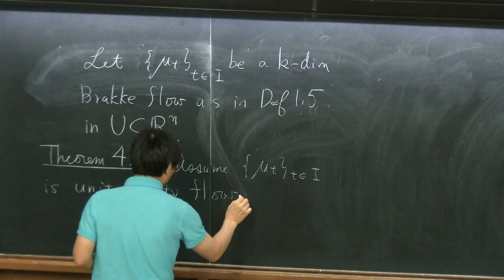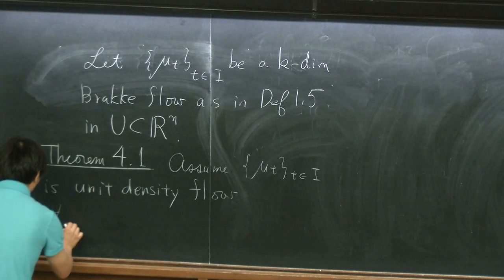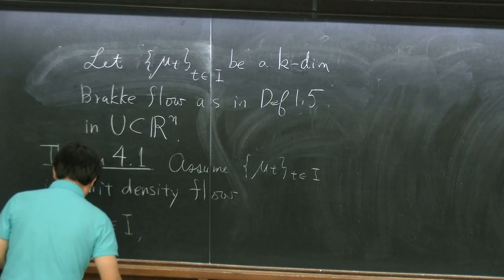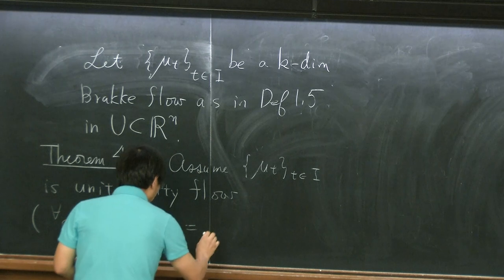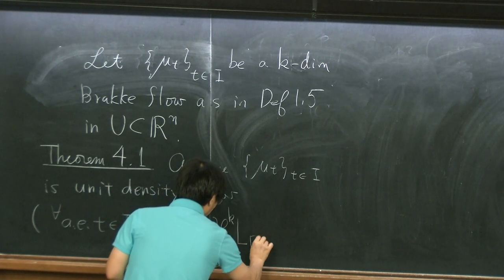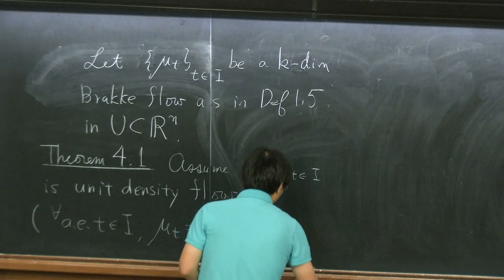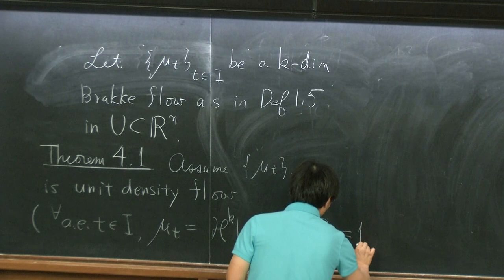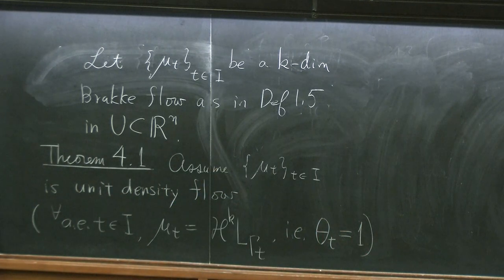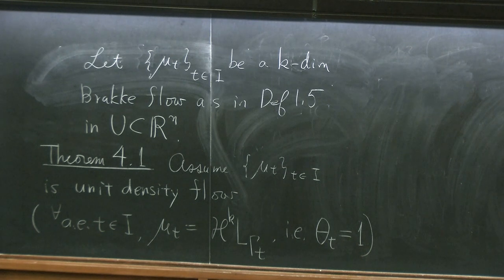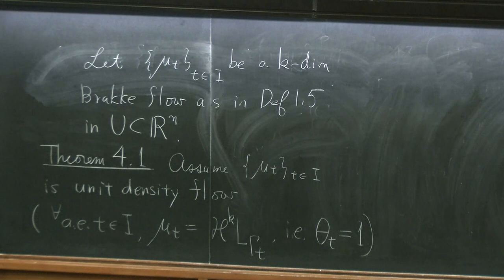So that means — just to remind you what this means — for almost all time, not all time but almost all time, I say that mu_T is of this form H^k restricted to gamma_T, where the multiplicity function I talked about is equal to 1 almost everywhere in spacetime. The meaning of this is really that even if you start out with this kind of multiplicity-1 situation, the surface maybe at some point, maybe some piece of the surface may come together, which may not be likely, but it's very difficult to exclude this kind of situation when a singularity happens, and afterwards maybe you have these two things moving together.